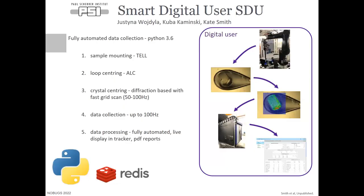The Smart Digital User itself deals with communications between all of our different services: mounting with the robot, loop centering, diffraction-based centering using our Eiger detector which we can run at 50 to 100 Hz, as well as data collection which we typically also do at 50 to 100 Hz. The results are displayed to users in a Polymer-based web application.